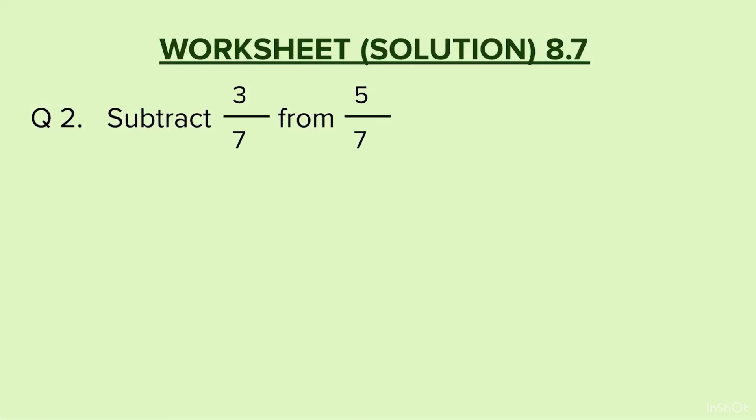Question 2, subtract 3 by 7 from 5 by 7. Ismein 5 by 7 pehle likhenge minus 3 by 7. Isko phir hum likhenge 5 minus 3, the whole upon 7, which is equal to 2 by 7, which is our answer.